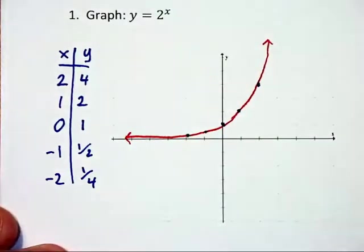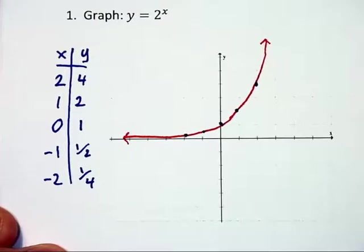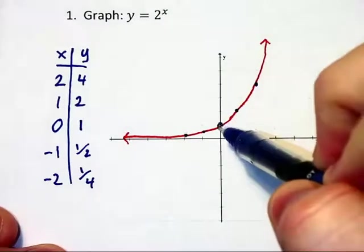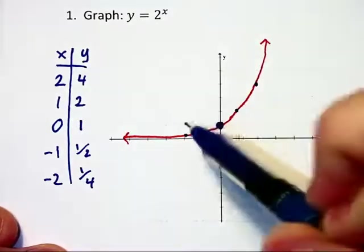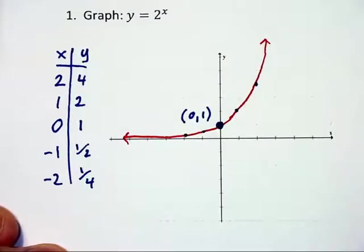This is the general look of any exponential function and I'd like to highlight a couple of points. First off, I'd like to highlight this point 0 comma 1. Your standard exponential graph will go through that point.